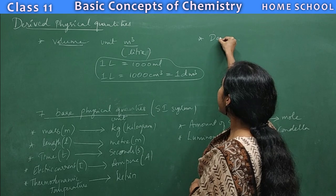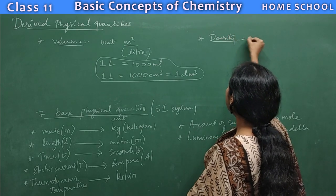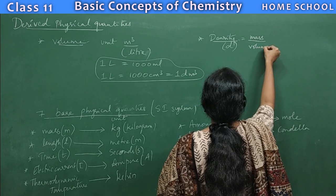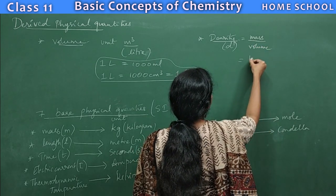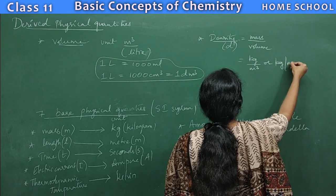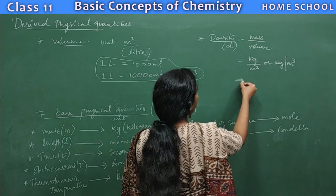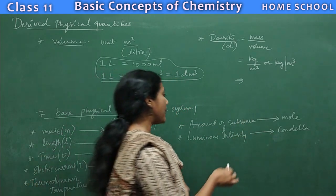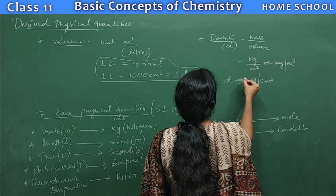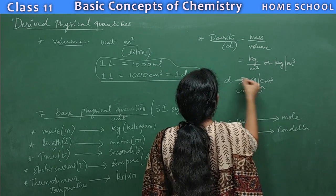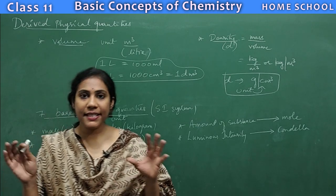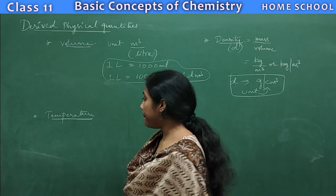The next derived unit is density, indicated with small d. Density is nothing but mass divided by volume. The SI unit is kg per meter cube, but in chemistry we normally use grams per centimeter cube. So density's unit is gram per centimeter cube.